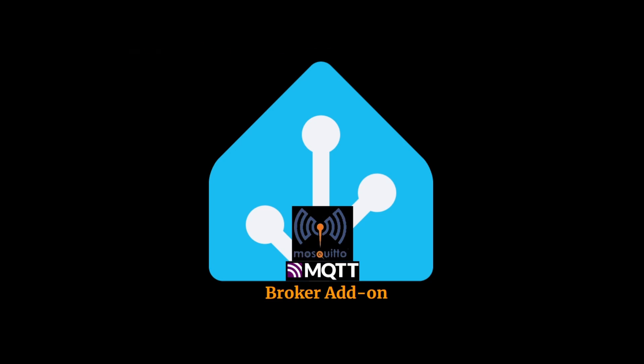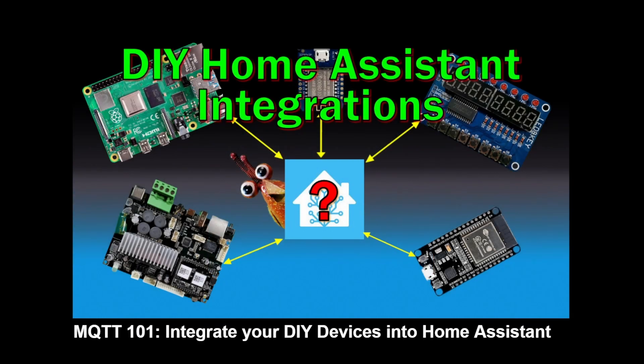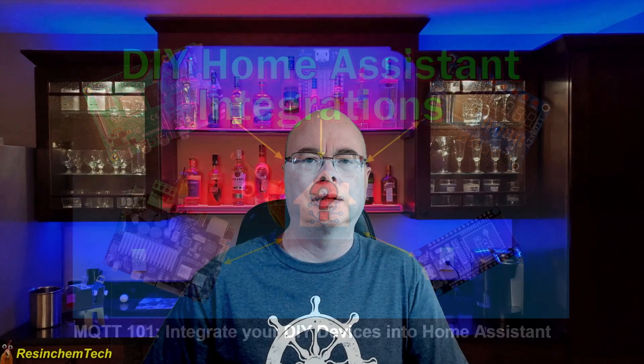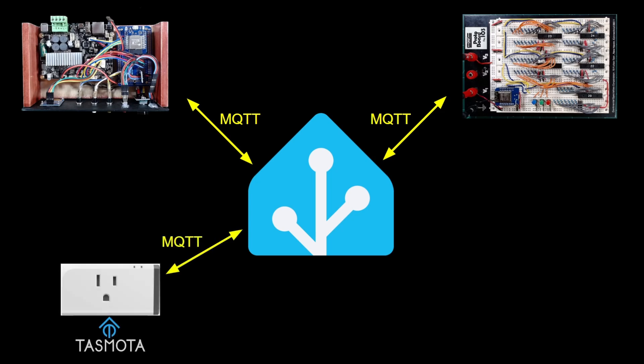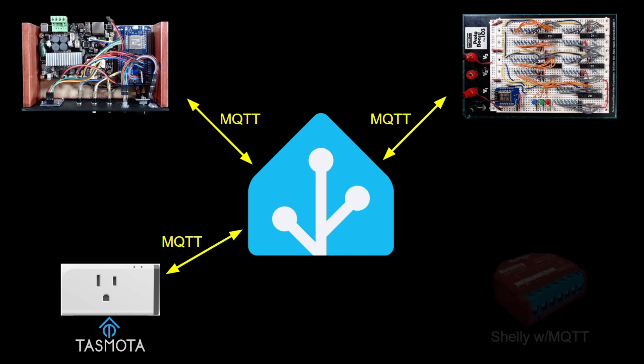If you're completely new to MQTT, you may wish to watch this video for more information, including definitions on things like topics, payloads, retained messages, and more. That video will provide a good base for actually implementing MQTT in your own projects. One of the primary reasons to use MQTT is to provide a Home Assistant integration of your device when there isn't a native integration. It's important to note that Home Assistant does not come with MQTT enabled out of the box, but it's very easy to add it.